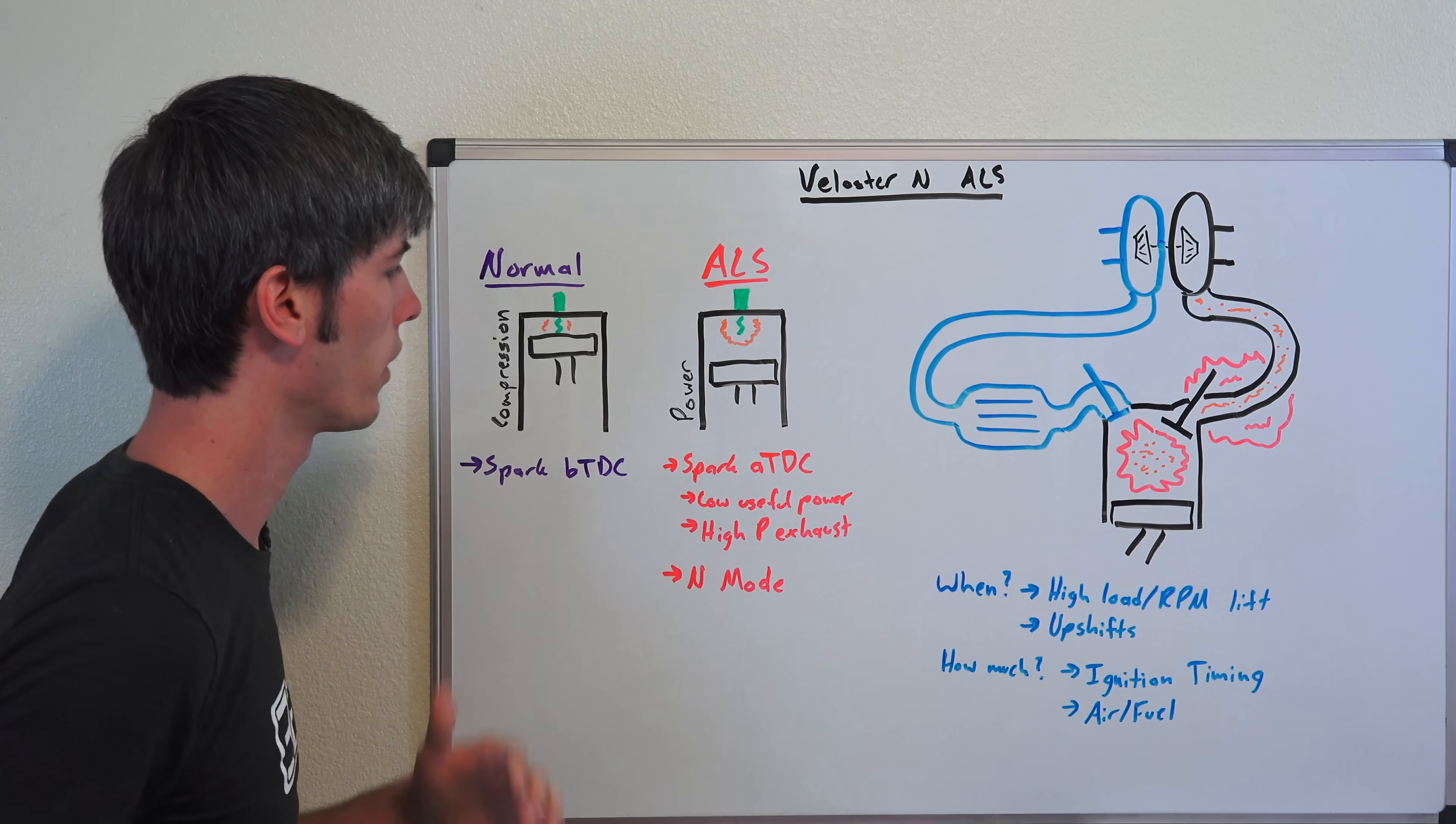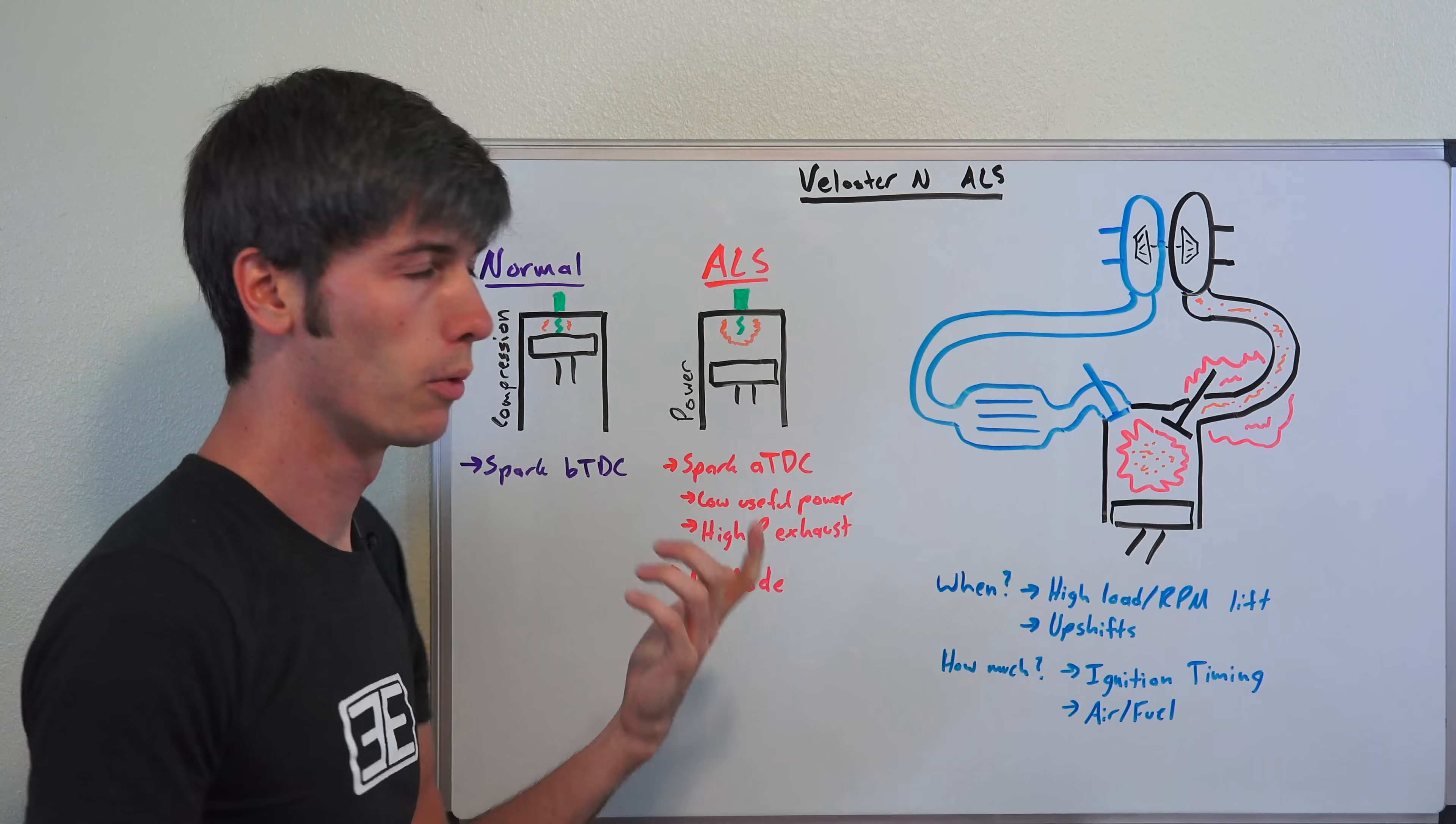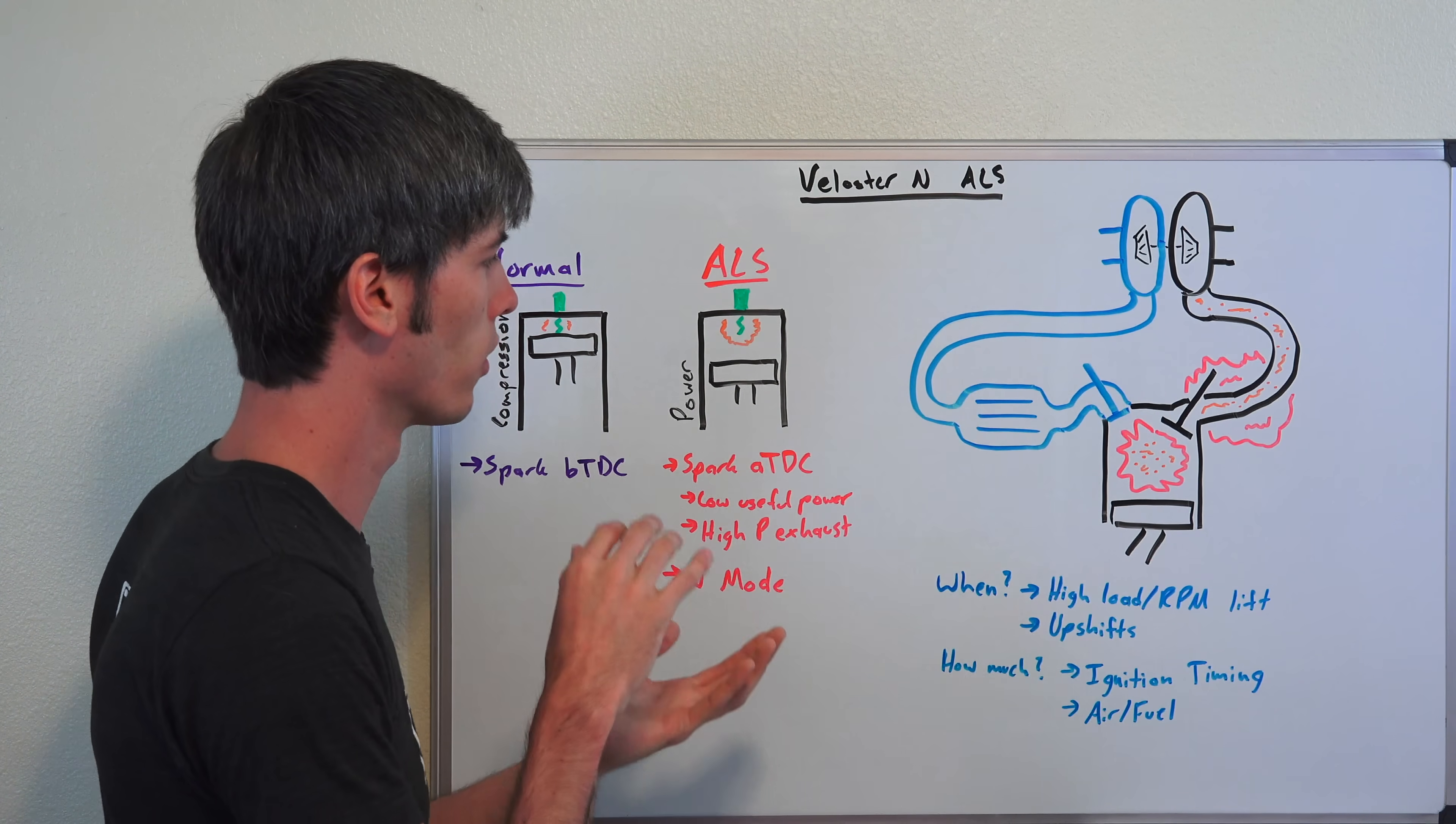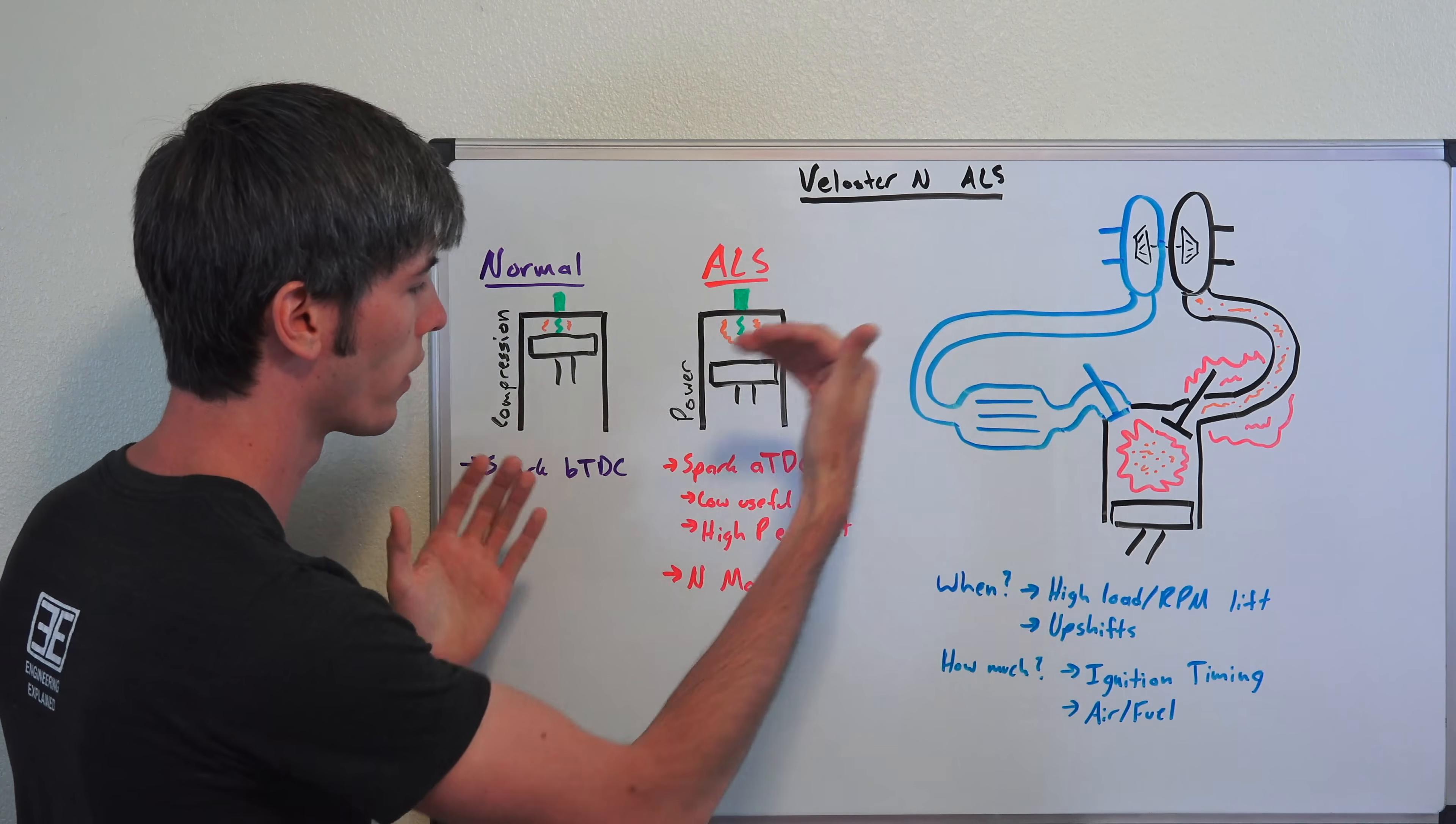You're having your spark ignite significantly after top dead center rather than before how you would normally to create power. So what that means is you're not creating a lot of useful power, which is fine because you're letting off the throttle. You're not asking for power in that moment, but it would be nice to have the turbocharger still spooled up.